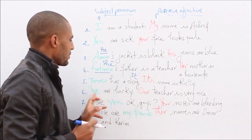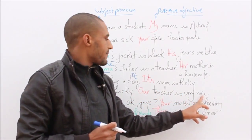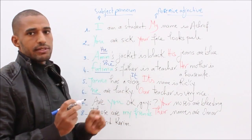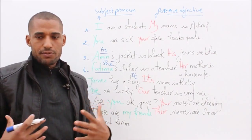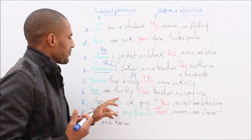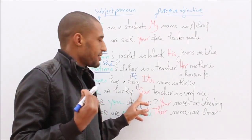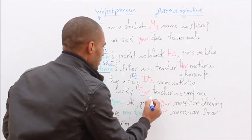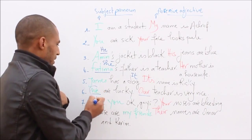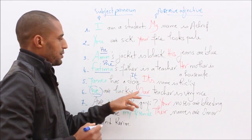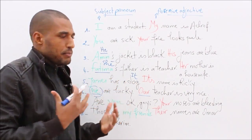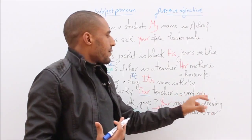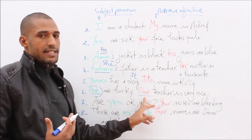Number six: We are lucky. Our teacher is very nice. 'We' is the subject pronoun — me and my friend. We are lucky. 'Our' refers to us, it refers to 'we'. Our teacher is very nice. So the possessive adjective for 'we' is 'our'.